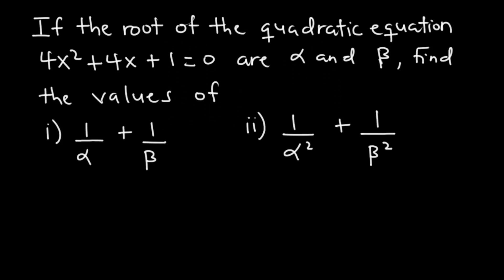In today's video we are going to solve a problem regarding the sum and product of roots of a quadratic equation. We are to find the values of 1 over alpha plus 1 over beta, and 1 over alpha squared plus 1 over beta squared, if the roots of the quadratic equation 4x squared plus 4x plus 1 equals 0 are alpha and beta.